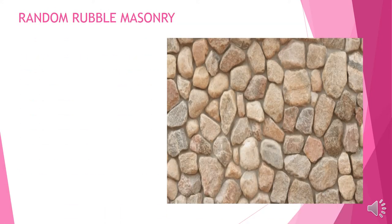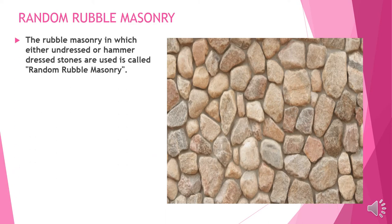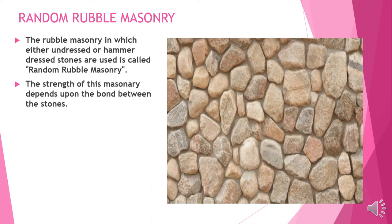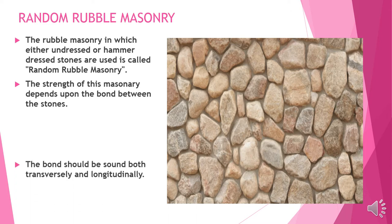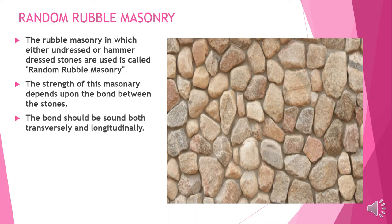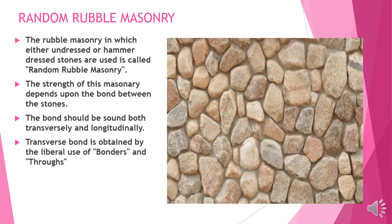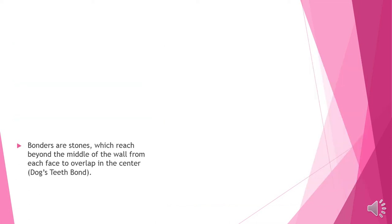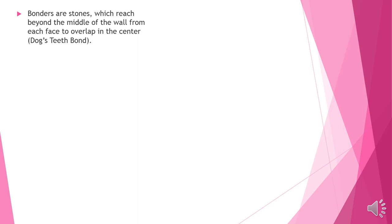Random rubble masonry: the rubble masonry in which either undressed or hammer-dressed stones are used is called random rubble masonry. The strength of this masonry depends upon the bond between the stones. The bond should be sound both transversely and longitudinally. Transverse bond is obtained by the liberal use of bonders and thoroughs.